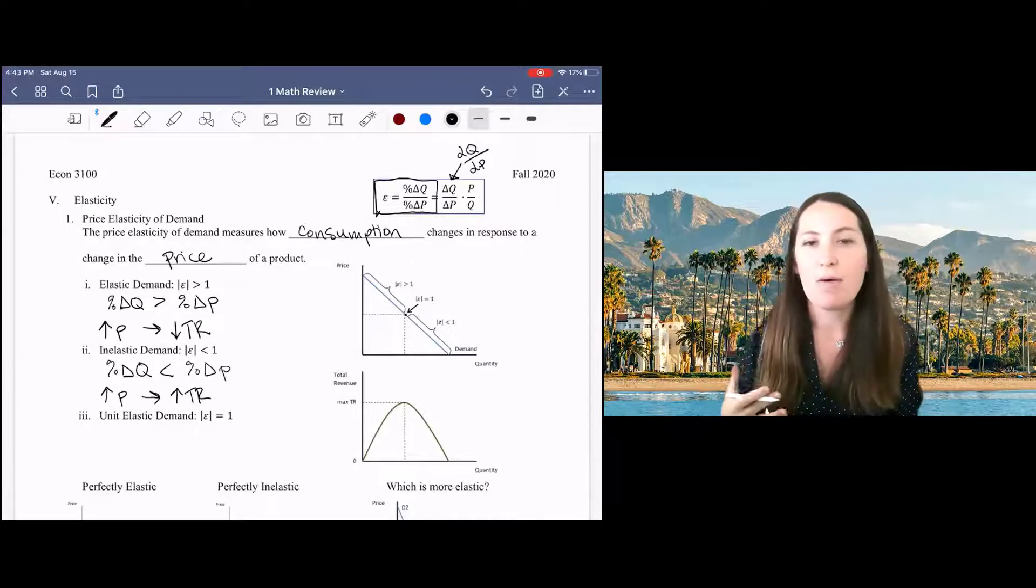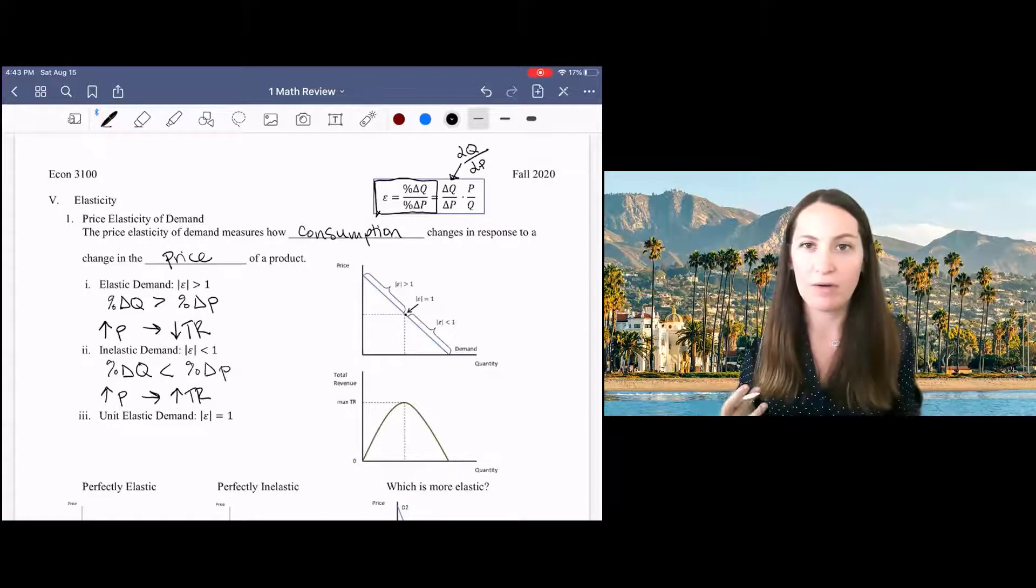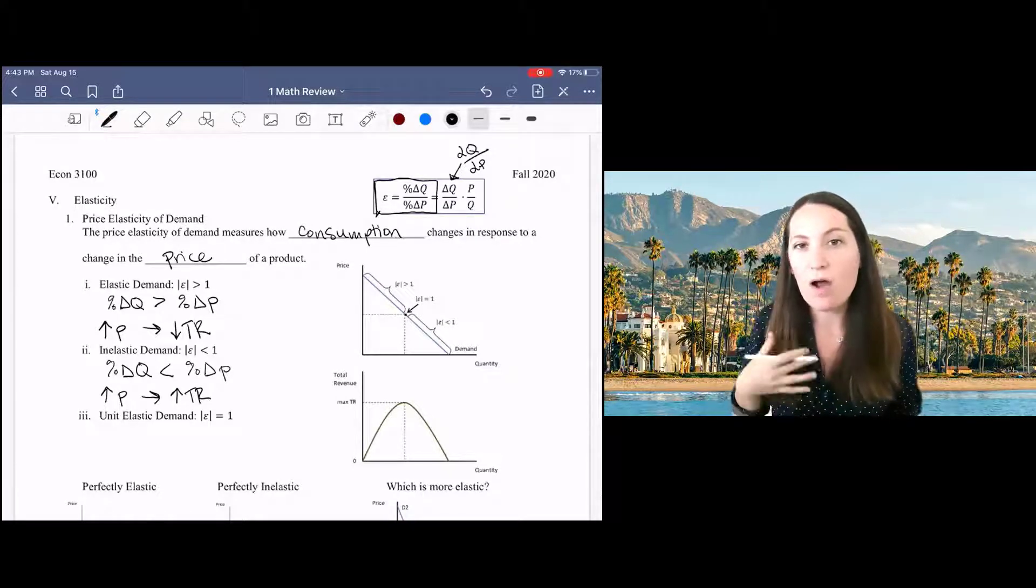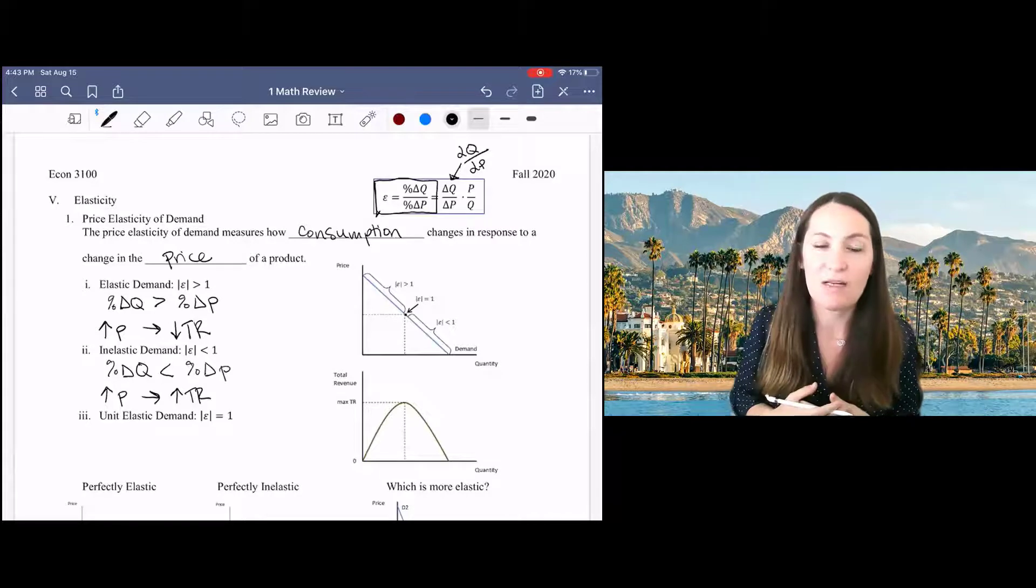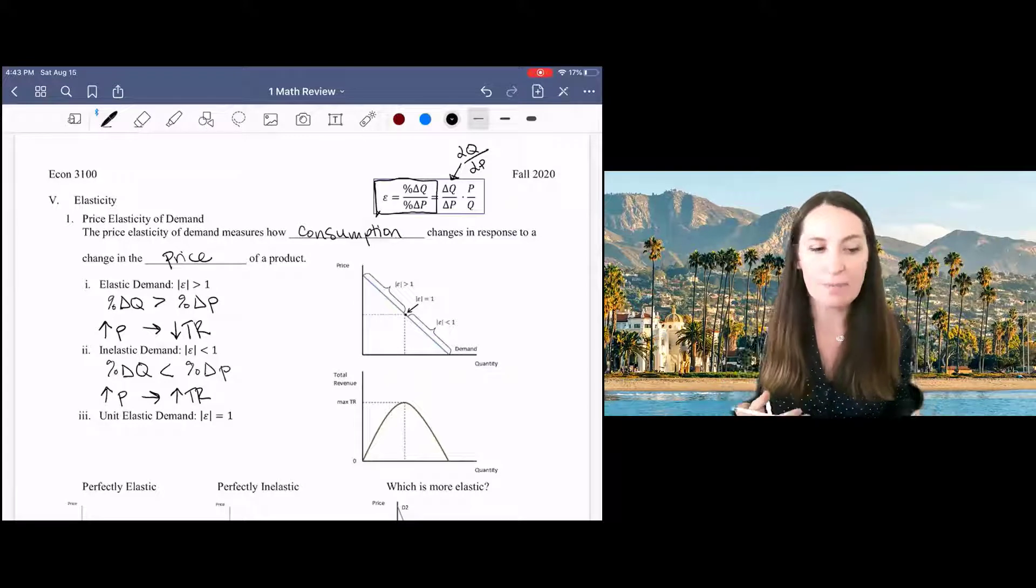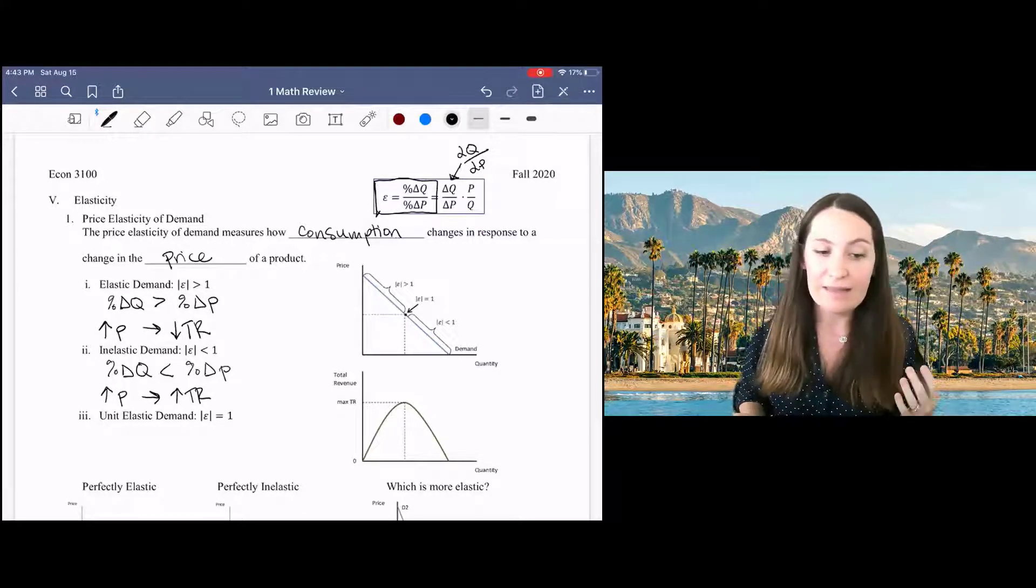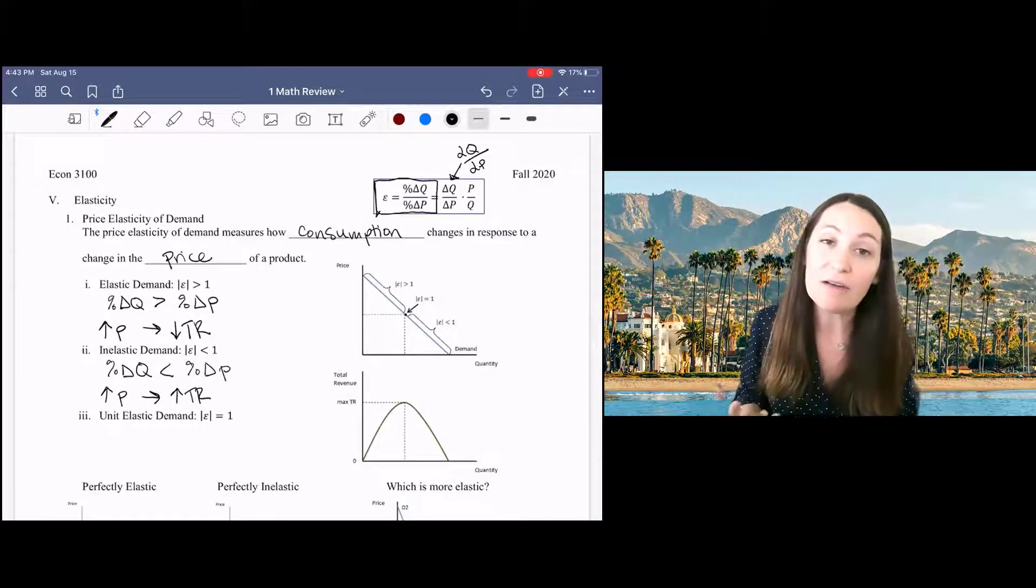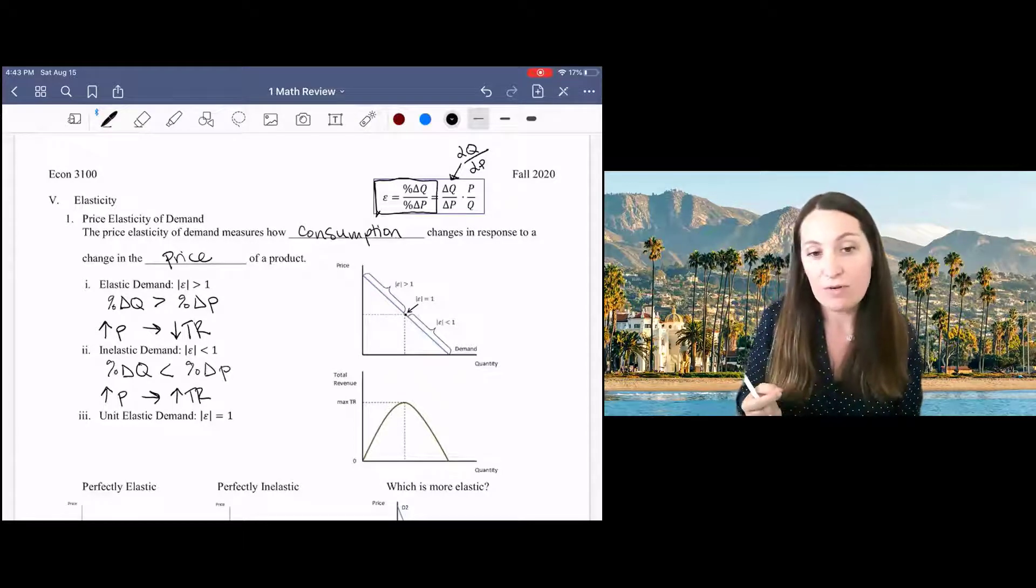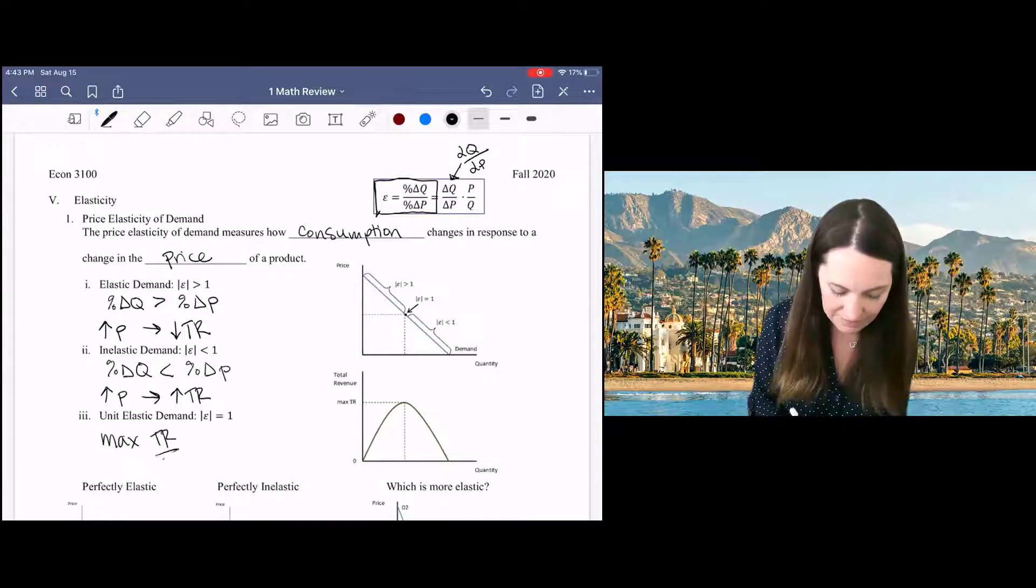It's useful to think about price elasticities of demand not just when you're a business thinking about whether or not to have a sale, but also if you're trying to formulate public policy. So we'll come back to elasticities when we talk about demand in a future lecture. So the last option here is when demand is unit elastic, when it's equal to one. And this happens for linear demand curves at the midpoint of the demand curve.